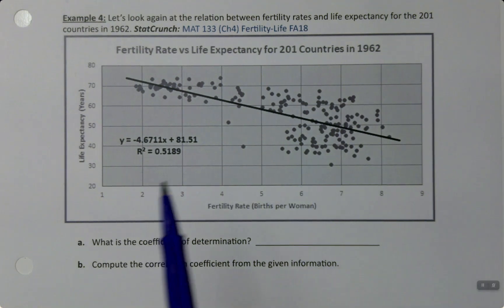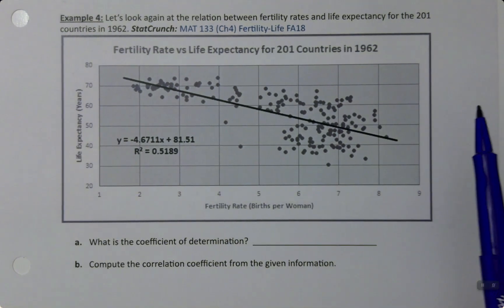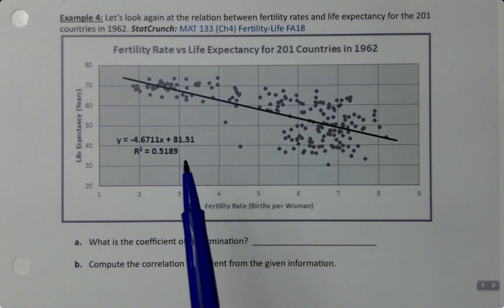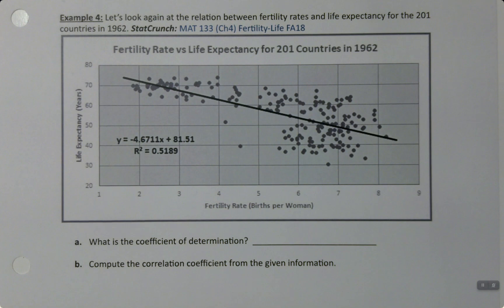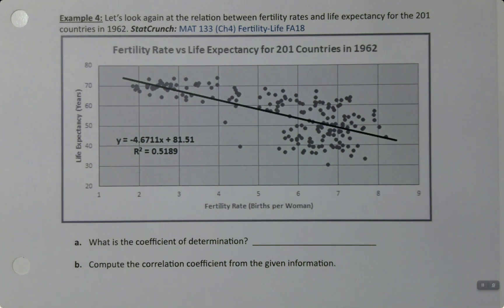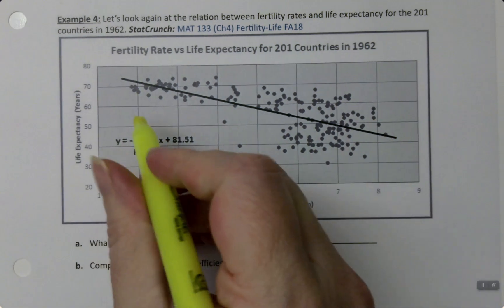We've seen this example that looks at the fertility rate and life expectancy for countries in 1962 before. But there was something on the graph, this exact same graph that was given to us earlier in Section 4.2. There was something on there that I bet you missed at the time, which is the R-squared value.